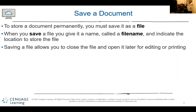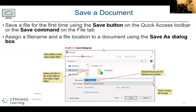To store a document permanently, you must save it as a file. When you save a file, you give it a name called a file name, and indicate the location to store the file. Saving a file allows you to close the file and open it later for editing or printing. Save a file for the first time using the Save button on the Quick Access Toolbar or the Save command on the File tab.